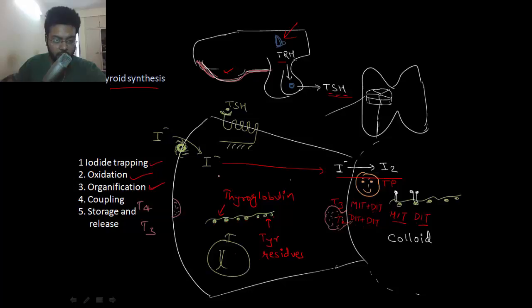Next step is coupling. Combination of mono and di will form T3. Combination of two diiodotyrosine will form T4. This step is also mediated by thyroid peroxidase, so thyroid peroxidase does three functions. The chunks of colloid are taken up by the follicular cells, and this vesicle will contain T3 and T4, which are released in the blood.